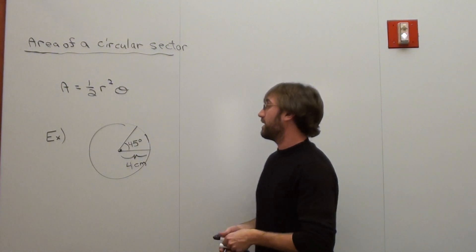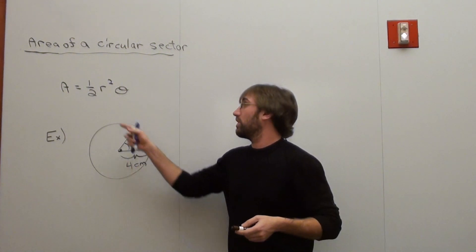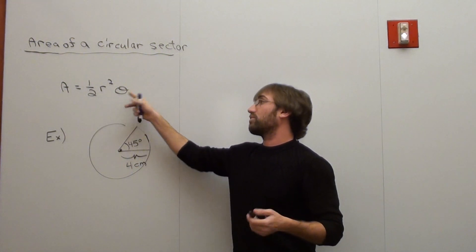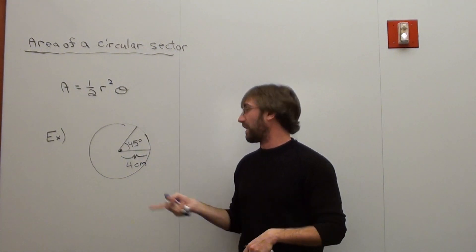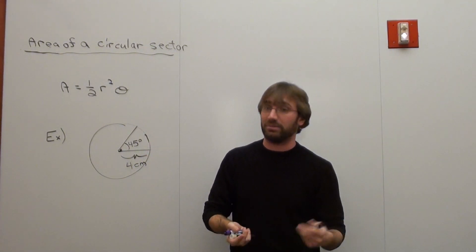So basically what we're trying to do here is, and I gave you the same exact example, we use the formula A equals one half radius squared times a radian measure. Now this is in degrees so we have to turn it into a radian measure.